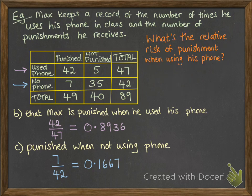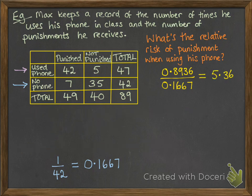Okay, with that, we can now work out a relative risk. What's the relative risk of punishment when using his phone? So how much more likely was he to be punished when he was using his phone? So we want to do the risky thing first. So that was the using his phone goes on the top. So that's 0.8936 compared to the non-risky thing, the not using his phone. And work out that division. 5.36.